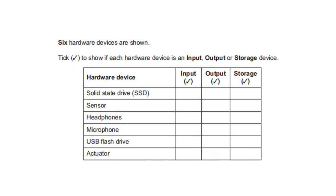Six hardware devices — tick whether each is an input, output, or storage device. Solid state drive (SSD) — storage device. Sensor — input device. Headphone — output device. Microphone — input device. USB drive — storage device. Actuator — output device.